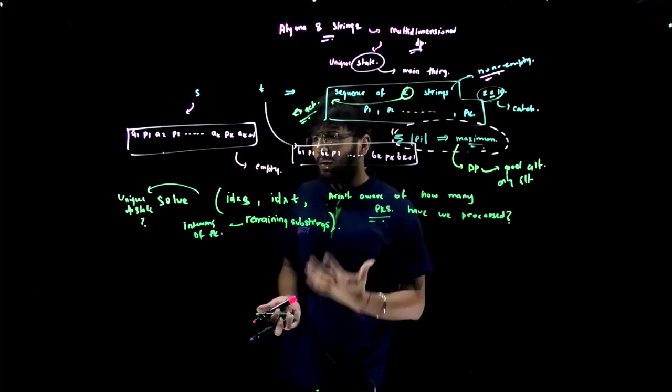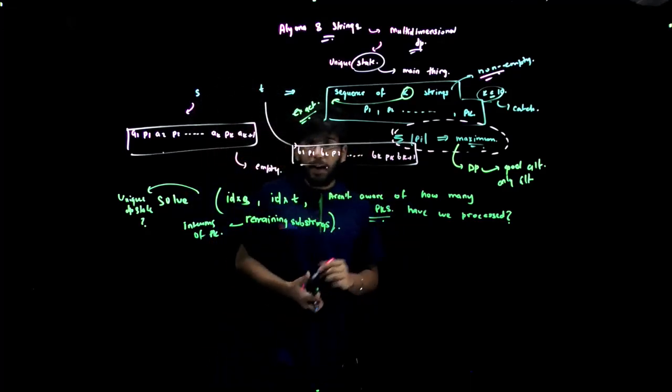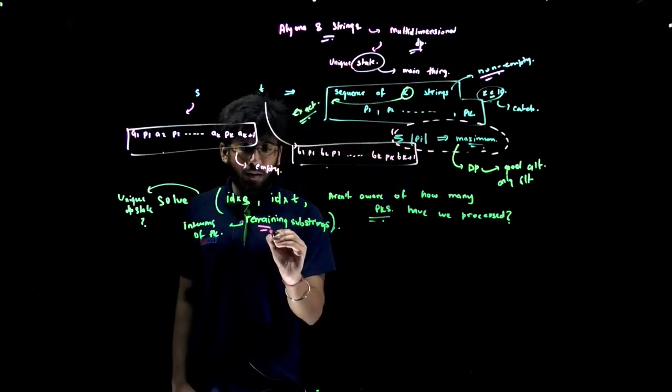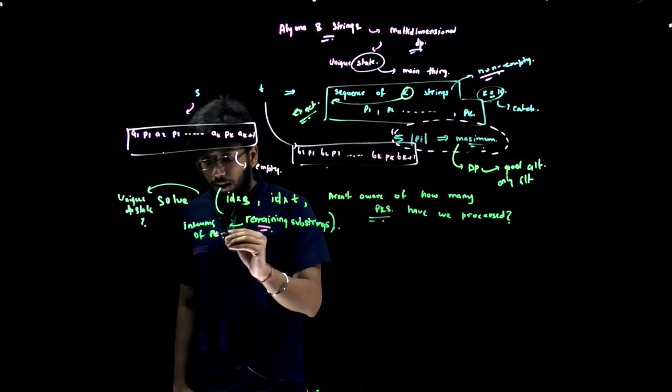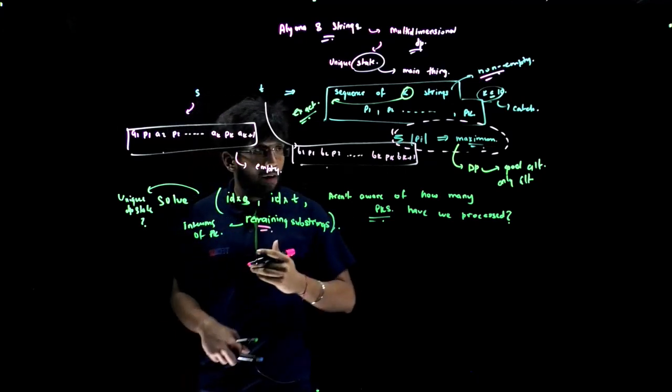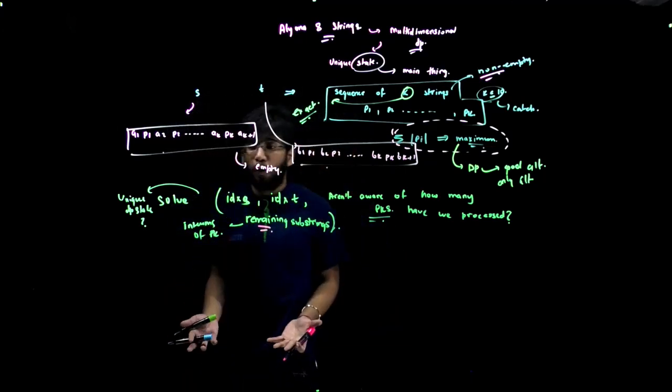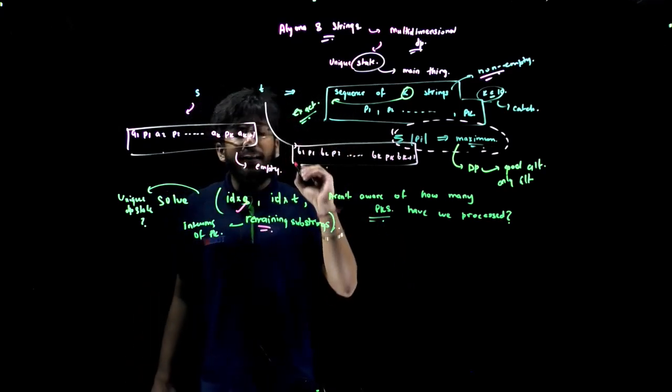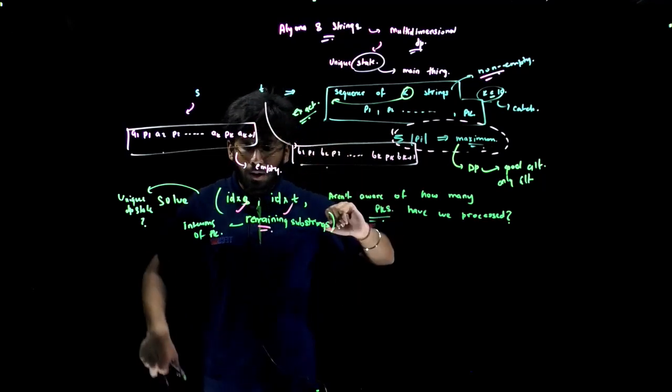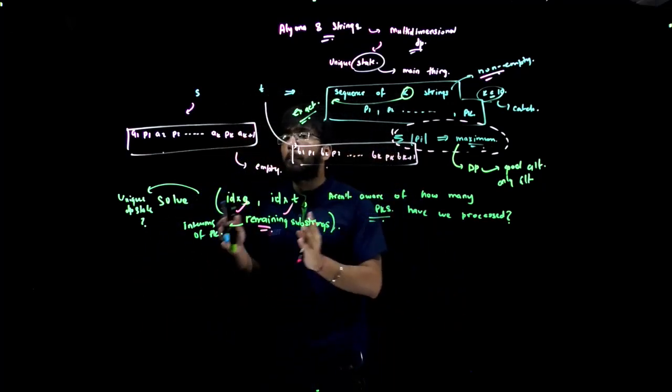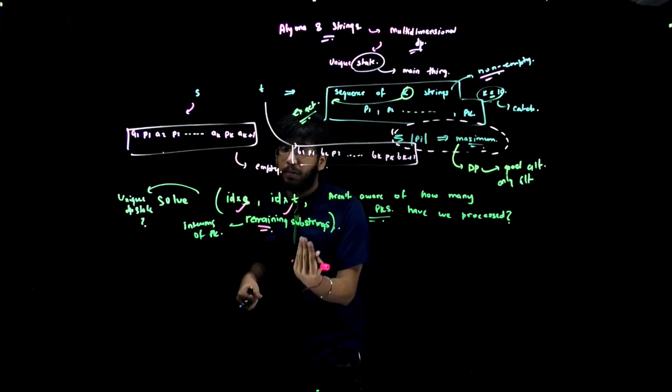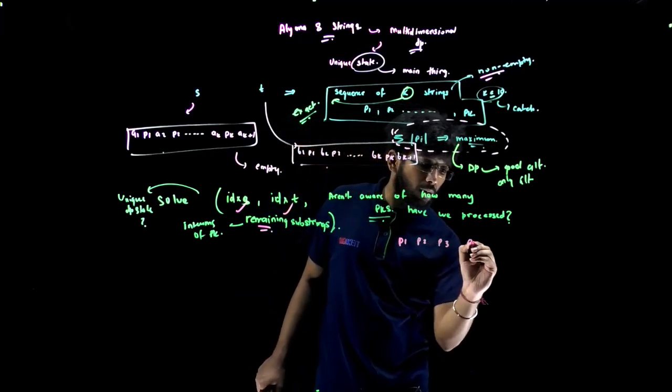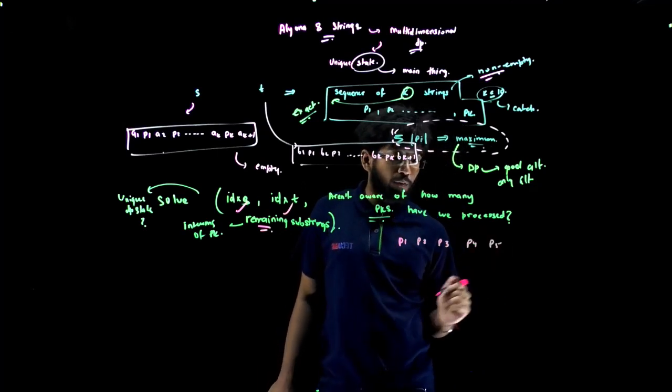Now, once you are able to realize this DP state, then the point is that it may happen that you have some remaining substrings in terms of pk, like you have five substrings that still need to be formed. But it may be that including the idx_s-th position and idx_t-th position, you may be at some particular substring.